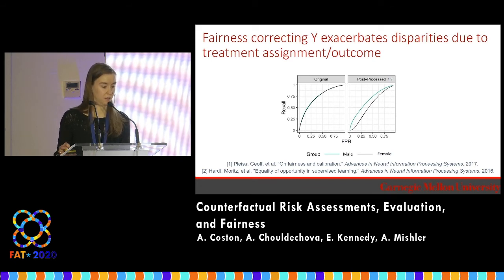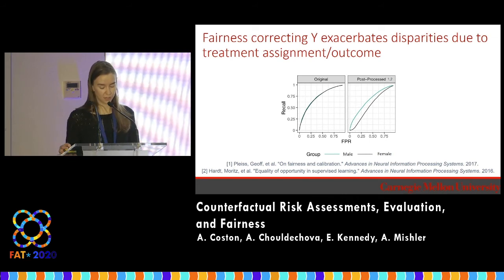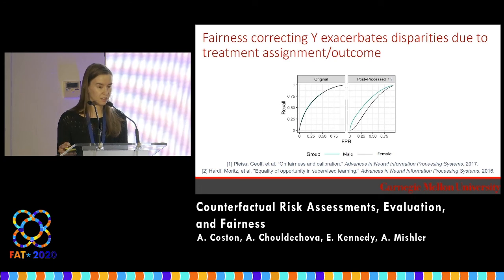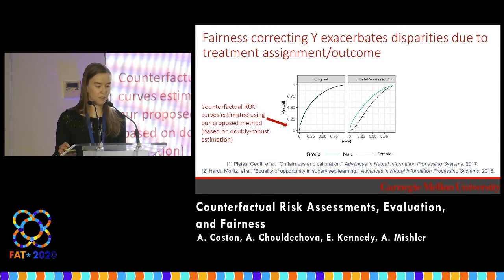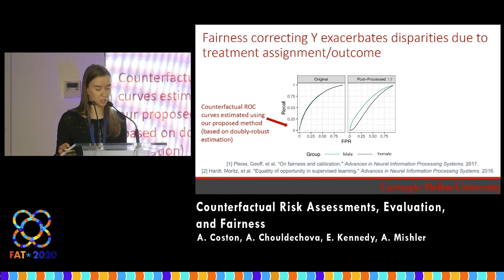And this can make a big difference when thinking about fairness correcting. If you had an observational approach and saw that the false positive rates were different by gender and decided to apply a post-processing method to fix that, we show here that this can actually exacerbate the initial disparities in treatment assignment. These are counterfactual ROC curves, and we see that originally there was no difference, but post-processing for fairness induces a disparity at the expense of the female students, who are the ones already hurt by the unfair treatment assignment.